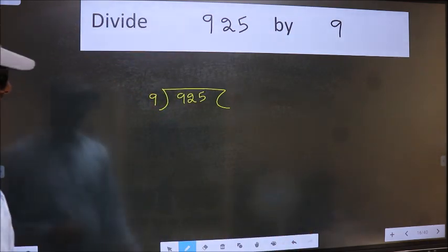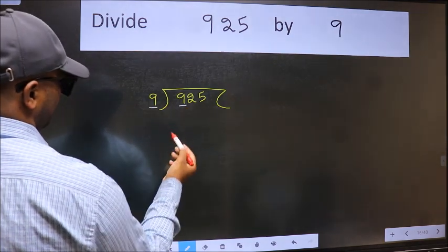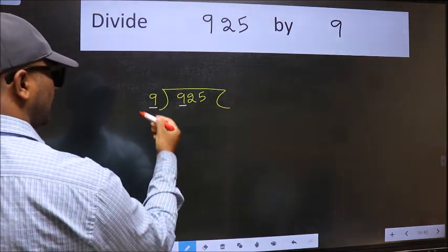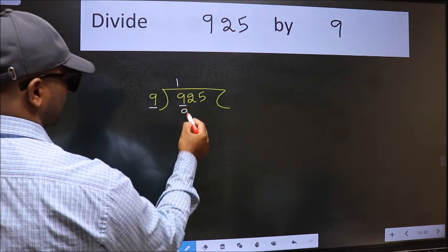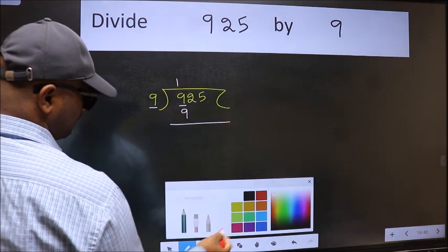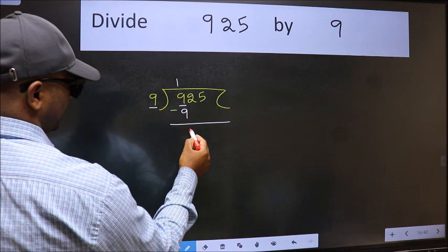Next. Here we have 9 and here 9. When do we get 9 in 9 table? 9 times 1 is 9. Now we should subtract. We get 0.